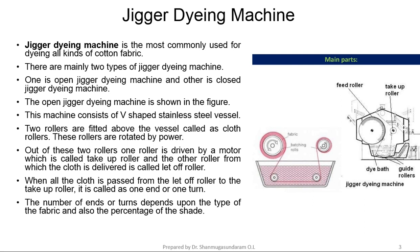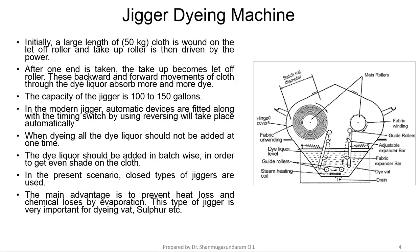The number of ends or turns depends upon the type of fabric and also the percentage of shade. Initially, a large length of 50 kg cloth is bound on the Let-Off Roller and the Take-Up Roller is then driven by power. After one end is taken, the Take-Up becomes the Let-Off Roller. This backward and forward movement of the cloth through the Dye Liquor absorbs more and more dye. The capacity of the Jigger is 102 to 150 gallons. In the modern Jigger, automatic devices are fitted along with a timing switch so that reversing will take place automatically. The Dye Liquor should be added batch-wise in order to get an even shade on the cloth.